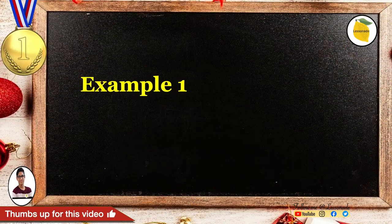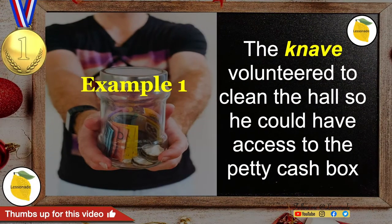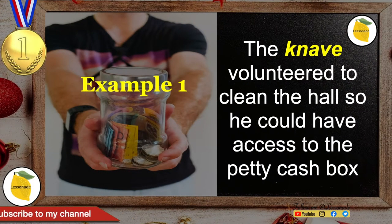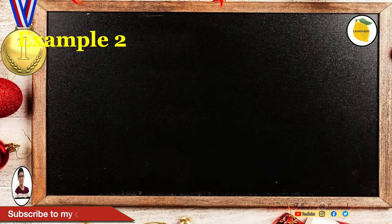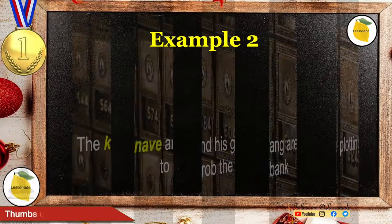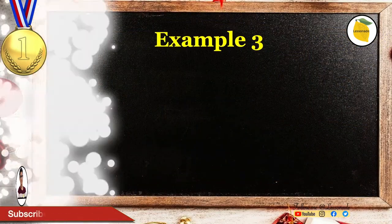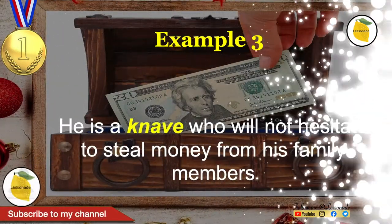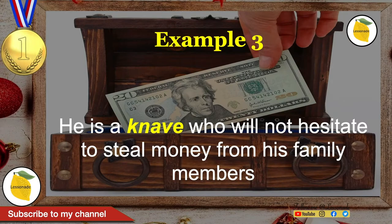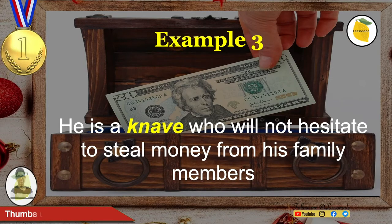Example 1: The knave volunteered to clean the hall, so he could have access to the petty cash box. Example 2: The knave and his gang are plotting to rob the bank. Example 3: He is a knave who will not hesitate to steal money from his family members.